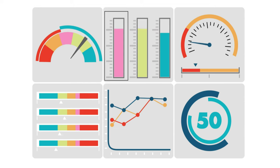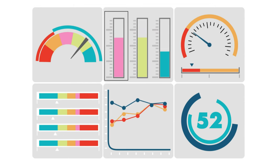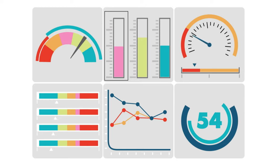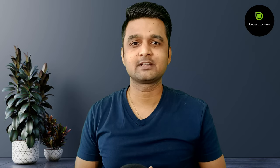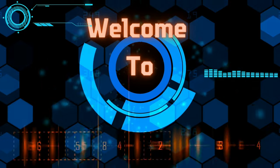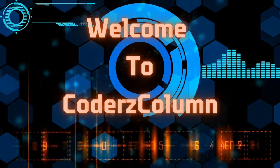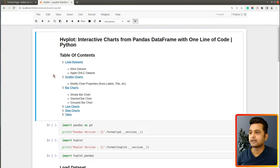Holoviews itself is a wrapper around Python libraries matplotlib, bokeh, and plotly, using one of them as a backend to create charts. By default, holoviews creates charts using bokeh as a backend, so charts created using hvplot are interactive bokeh charts in reality. My name is Sunny Solanki, and in this video I will explain how to create interactive charts from a pandas DataFrame using hvplot in Jupyter Notebook.